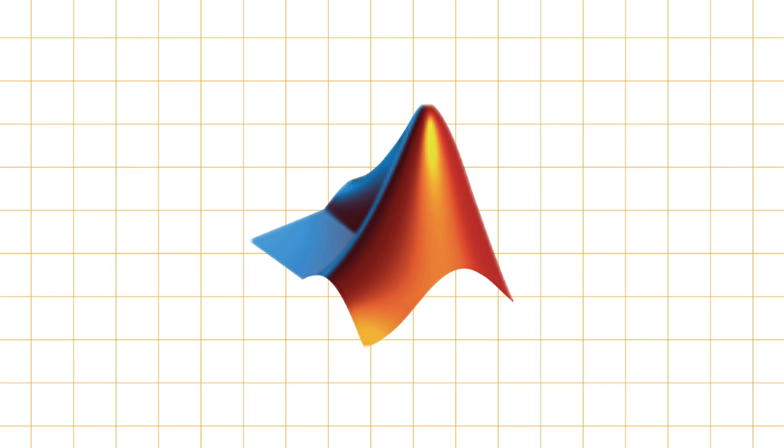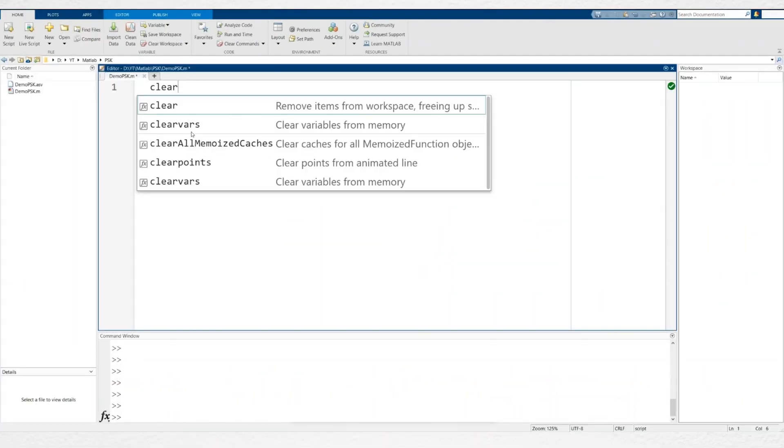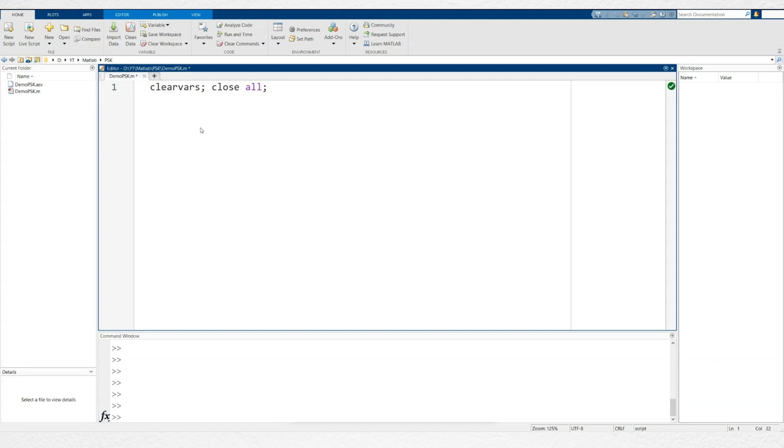Now, let's jump into MATLAB, where I'll demonstrate how to modulate data bits using the PSK modulator, plot the constellation, and visualize the modulated signal. At the beginning of the script, we'll clear the workspace and close any open plots.